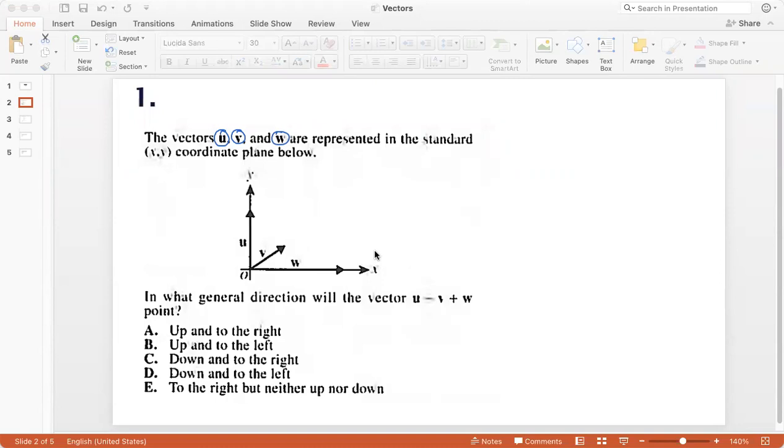And you can see that each vector has a scalar value, which is the length of the vector, and it has a direction. So u is along the y-axis, w is along the x-axis, and v is in the first quadrant. In what direction will the vector u minus v plus w point?